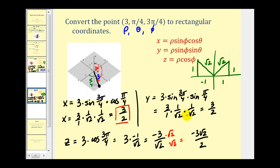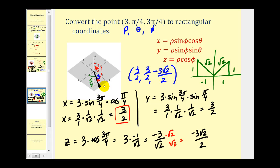So to put this all together, our rectangular coordinates are three halves for x, three halves for y, and negative three square root two over two for z. Because phi is more than 90 degrees — the angle between the segment and the positive z-axis — the point is below the xy-plane as we see here. That's going to do it for the introduction to spherical coordinates. I hope you found this helpful.